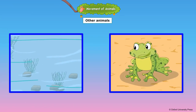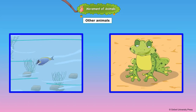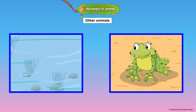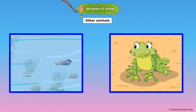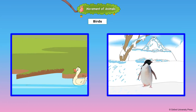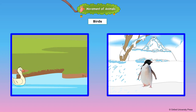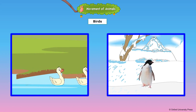A frog is adapted to living both on land and in water. On land it breathes through its lungs and in water it can breathe through its moist skin. Water birds such as ducks have webbed feet to swim in water. The wings of the penguin have evolved into flippers that help them to swim.